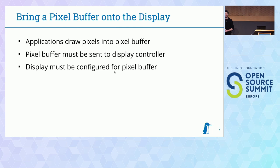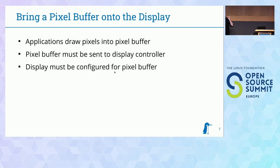Step one: bring a pixel buffer onto the display. What usually happens is that the application first draws pixels into some buffer — some memory — and puts them in a specified format such as RGB or NV12, writing the color of each pixel. Then this pixel buffer must be sent to the display controller, which is responsible for driving the display. The display must be configured to correctly interpret the data in this buffer: the color format, the size, the stride — how long the lines of the buffer are — so all of this has to be configured in the display controller.